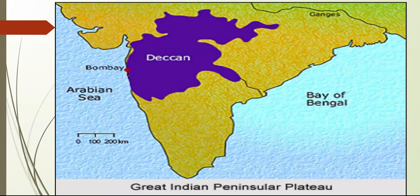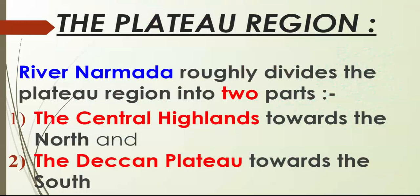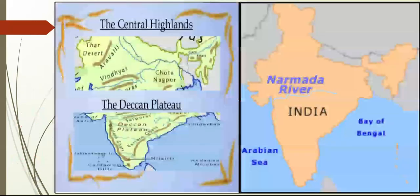Can you see this map of the Great Indian Peninsular Plateau, which has the Deccan Plateau shown in the purple shaded part? River Narmada is the most important river of the plateau region because it roughly divides the plateau region into two parts: first, the Central Highlands, and second, the Deccan Plateau. The Central Highlands lie towards the north and the Deccan Plateau lies towards the south.